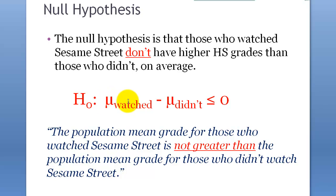So, mu watched minus mu didn't. In other words, mu Sesame Street minus mu non-Sesame Street would be either no difference, so either zero or no positive difference, or negative. That's how you do it. It's just like any other hypothesis testing.